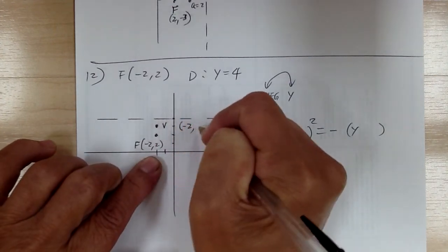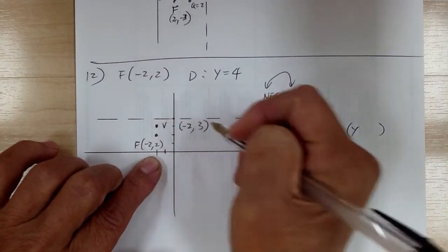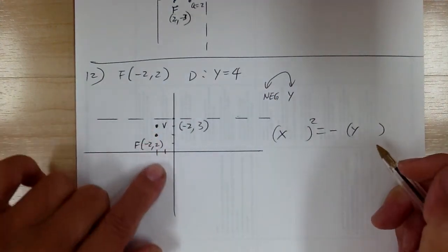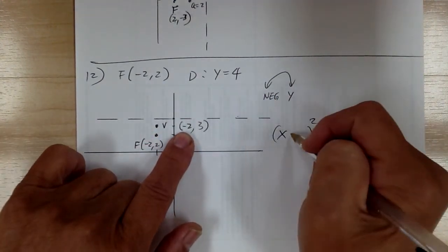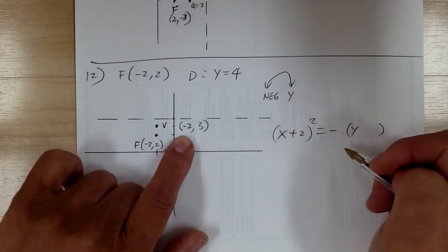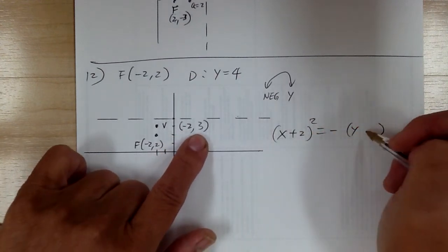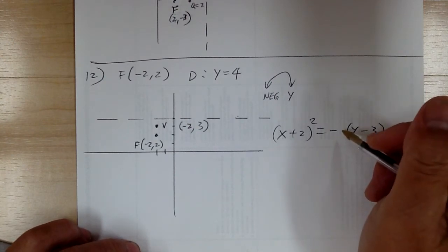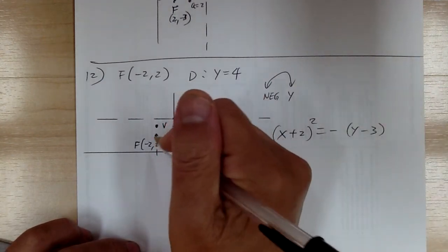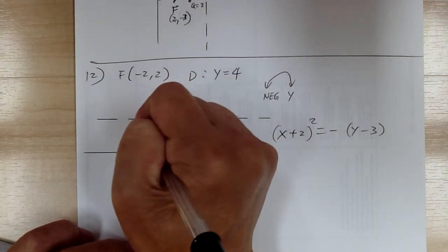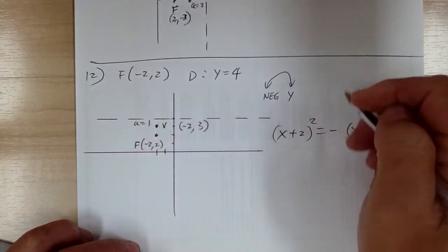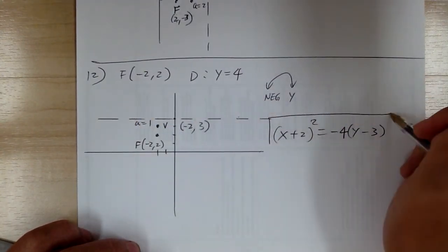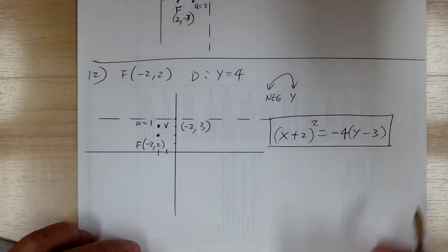So you're going to have x minus negative 2, which gives you x plus 2, and y minus 3. Next figure out your 4a — from the picture you can see that a equals 1, so 4a equals 4. And so this is number 12.